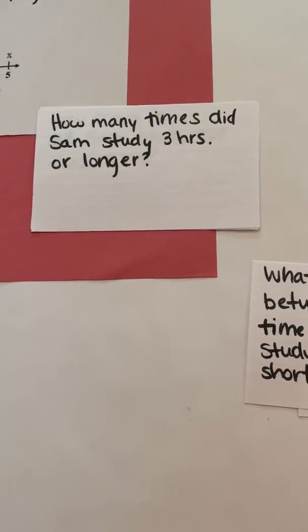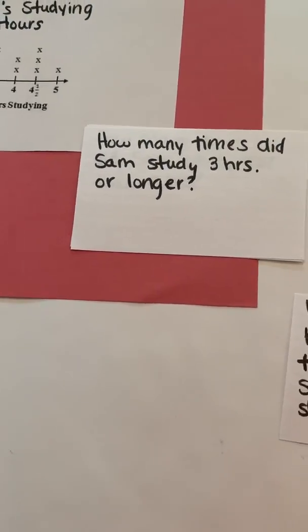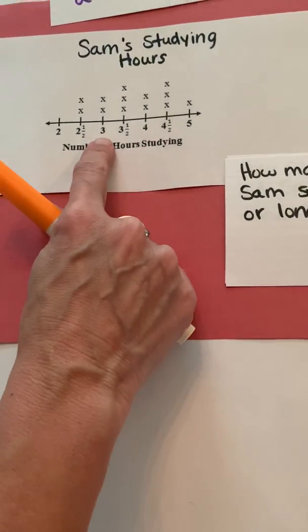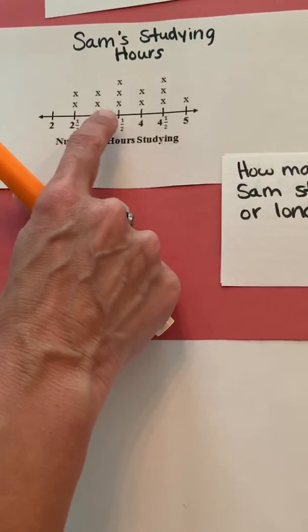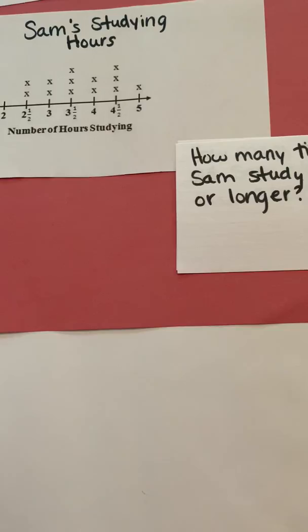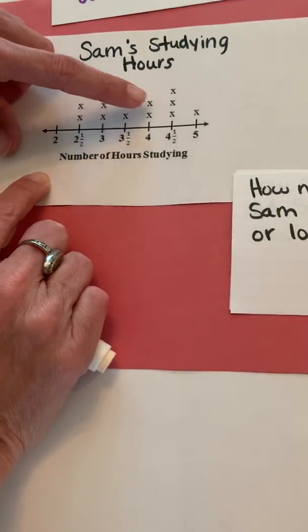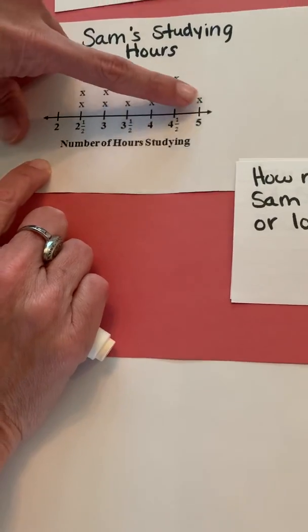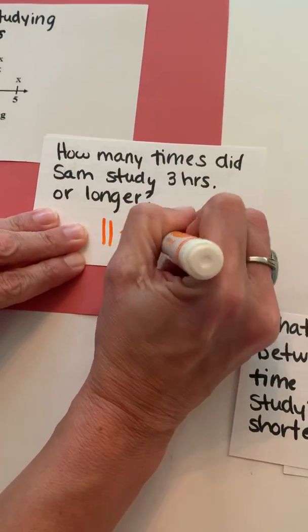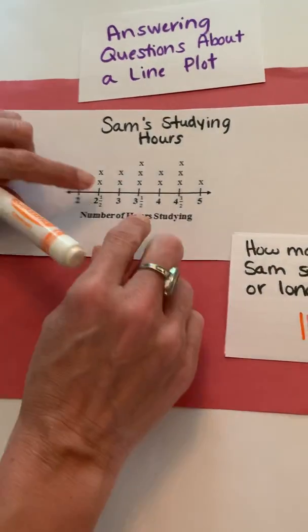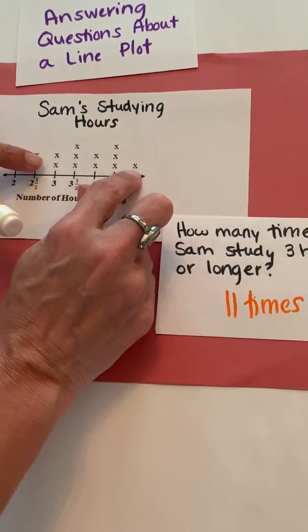How many times did Sam study three hours or longer? All right, how many hours did Sam study three hours or longer? Well, I'm going to find three hours. So three hours or longer means I include the three hours and everything past it. So how many times did he do that? He did it one, two, three, four, five, six, seven, eight, nine, 10, 11, 11 times. Another way that we could count that is kind of what we did earlier. I see three, six, eight, 10, 11.